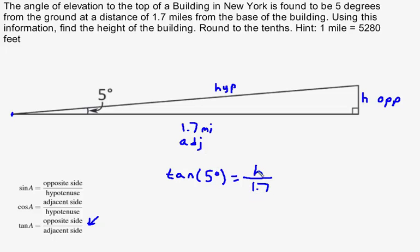So since I want to solve for the height of the building, and the 1.7 is being divided, I will multiply both sides by 1.7. And this simplifies down to be the number 1.